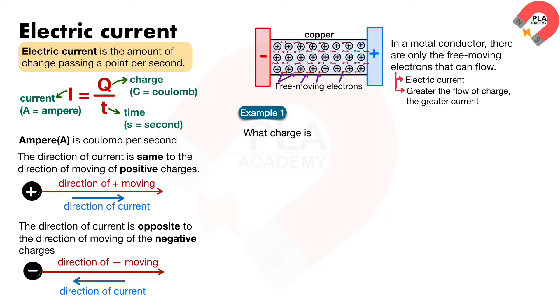For example 1, what charge is delivered if a current of 250 mA flows for 40 seconds?